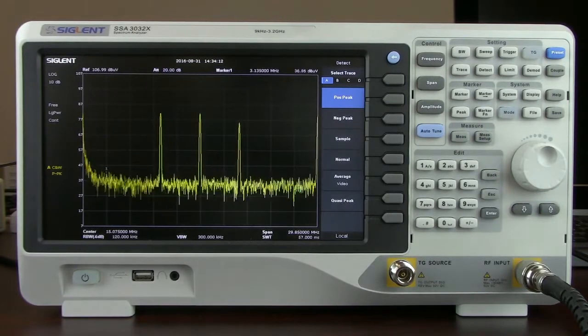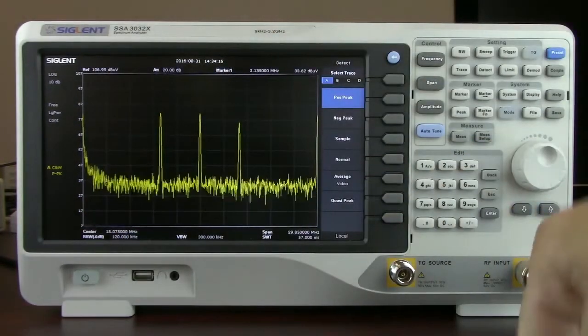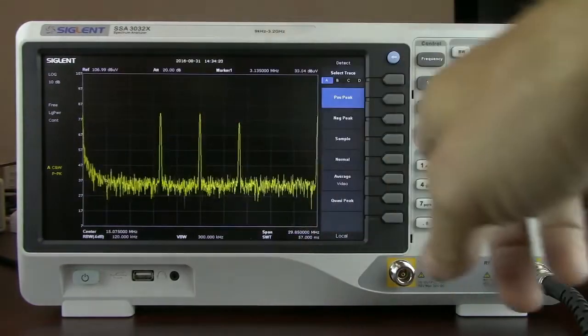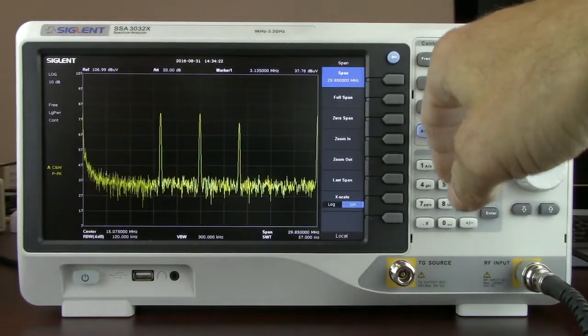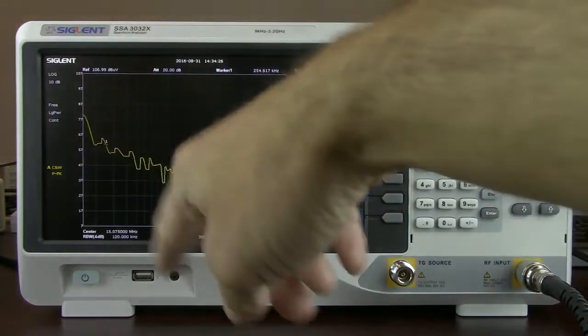Some other helpful features here with the SSA when it comes to performing pre-compliance measurements. Normally we have log amplitude and linear frequency. But in pre-compliance applications or compliance applications, we typically see log log. If we press the span key, we'll see that the X scale can be changed to log. So now we've got log amplitude as well as log frequency.